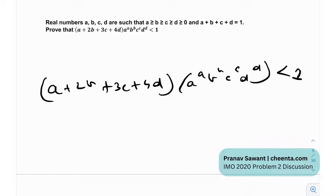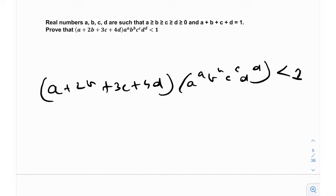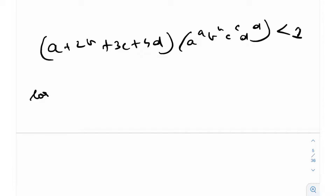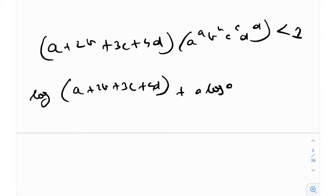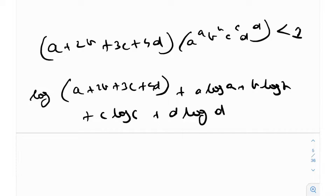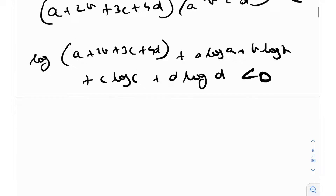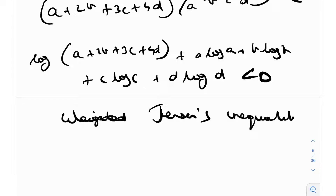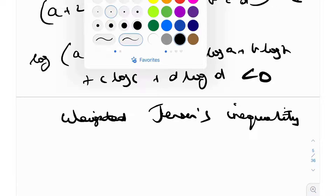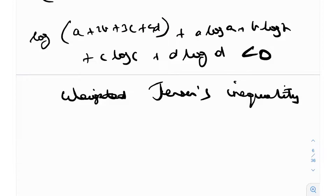There are a few ways to do this. One technique: take log. When you take log, you're left with (a + 2b + 3c + 4d) plus a·log a + b·log b + c·log c + d·log d, which must be less than log 1 = 0. This is provable by the weighted Jensen's inequality, since log is a concave function. However, in my opinion, the better — more elementary — solution is by using the weighted AM-GM technique. You can solve it using weighted Jensen's inequality, but let's focus on the weighted AM-GM application.